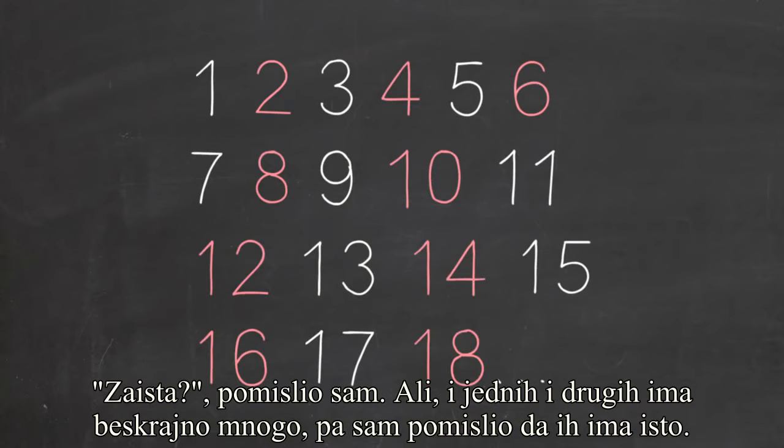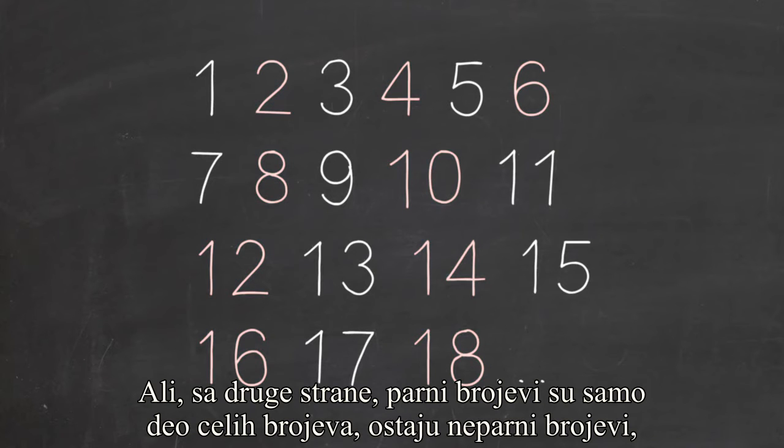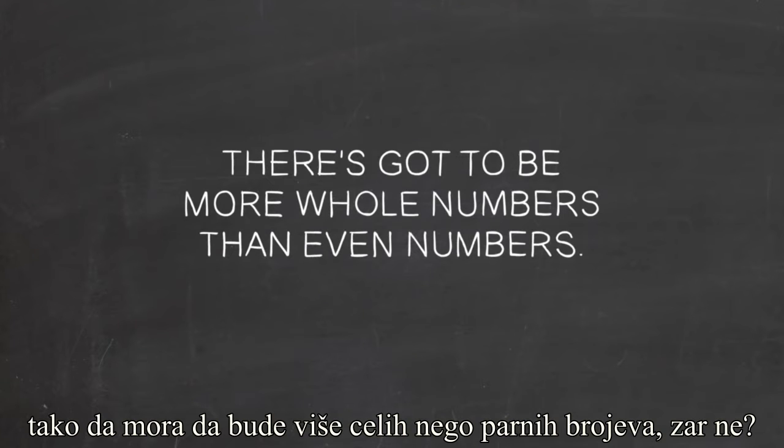Well, yeah, there are infinitely many of both, so I suppose there are the same number of them. But on the other hand, even numbers are only part of the whole numbers. All the odd numbers are left over, so there's got to be more whole numbers than even numbers, right?